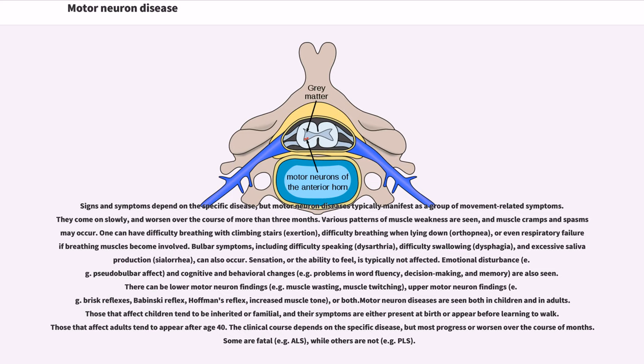Signs and symptoms depend on the specific disease, but motor neuron diseases typically manifest as a group of movement-related symptoms. They come on slowly, and worsen over the course of more than three months. Various patterns of muscle weakness are seen, and muscle cramps and spasms may occur. One can have difficulty breathing with climbing stairs, exertion, difficulty breathing when lying down, orthopnea, or even respiratory failure if breathing muscles become involved.